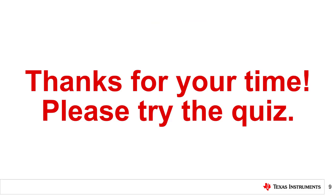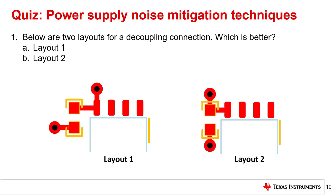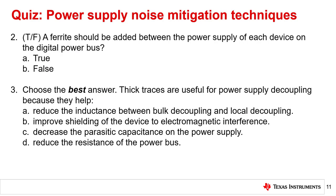That concludes this video. Thank you for watching. Please try the quiz to check your understanding. Question 1: Below are two layouts for a decoupling connection — which is better? The correct answer is B, layout 2, because the decoupling capacitor is in parallel with the pin, as opposed to being connected with a stub as in layout 1. Question 2: True or false — a ferrite should be added between the power supply of each device on the digital power bus. The correct answer is false. The ferrite was added to decouple the ADC digital supply from the fan-out buffer supply because the fan-out buffer supply had clocking transients; this will not necessarily be the case for every device on the digital supply bus. Question 3: Thick traces are useful for power supply decoupling because they help — the correct answer is A: thick traces help reduce the inductance between bulk decoupling and local decoupling capacitors.